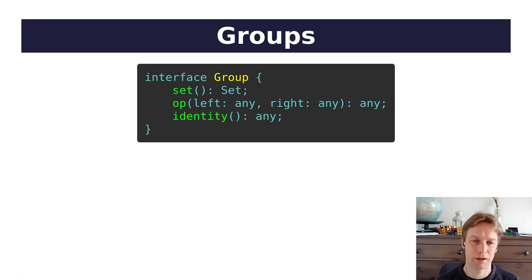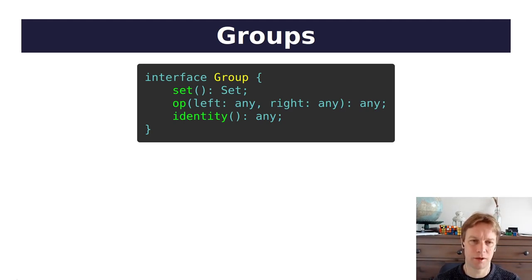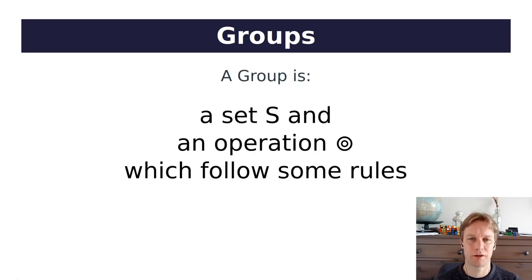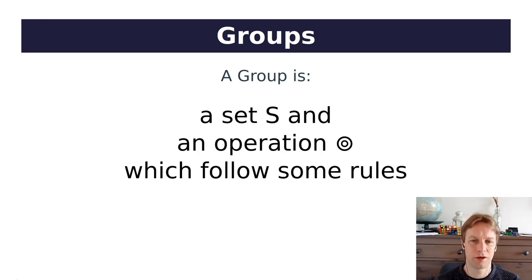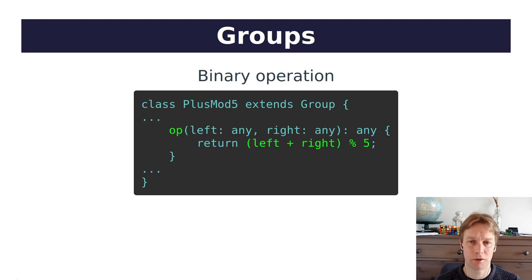Here's how we would say this in more mathematical language. A group consists of a set and an operation dot, which follow some rules. So not just any old set and any old operation — they have to follow some rules. Let's go through the rules. But first, let's talk about an example of a binary operation. This is the op part — that dot thing. So let's have an example of a group.